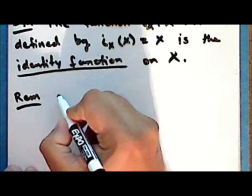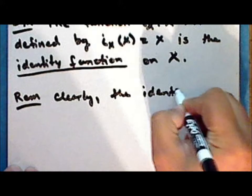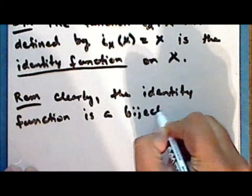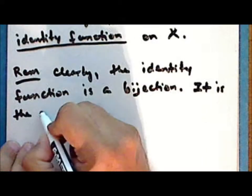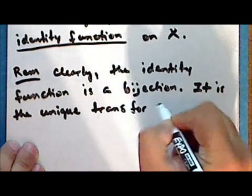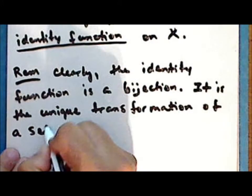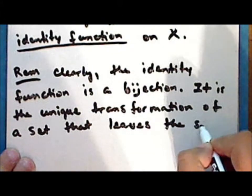Clearly, the identity function is a bijection, and it is the unique transformation of a set that leaves the set unchanged.